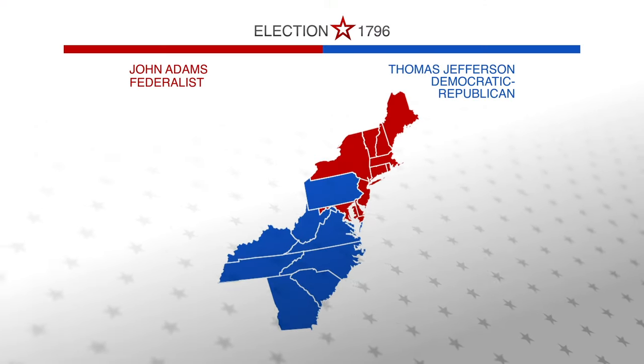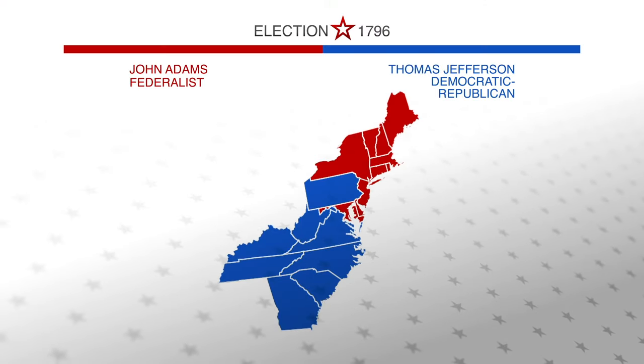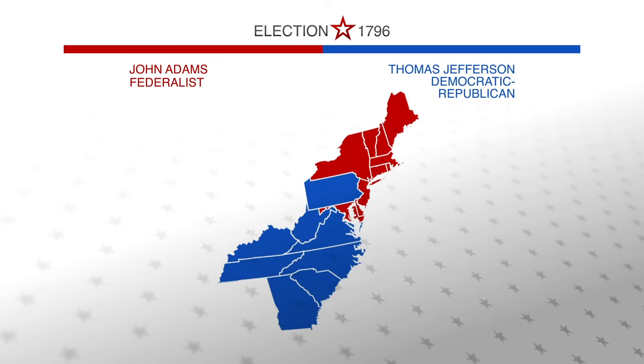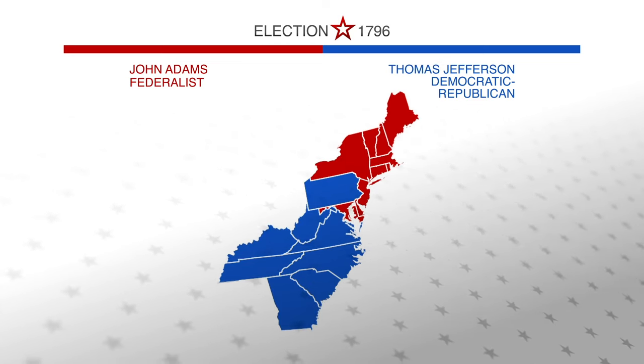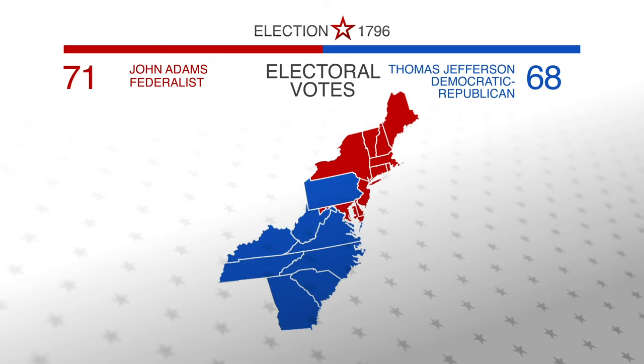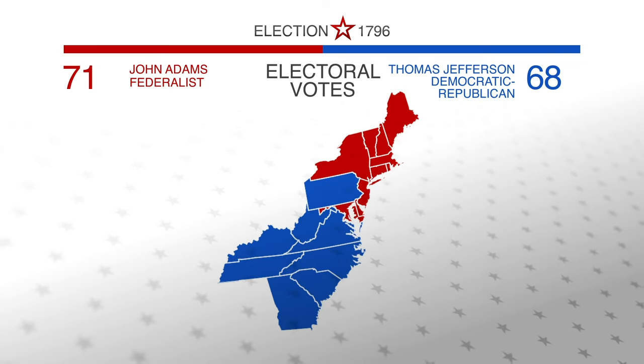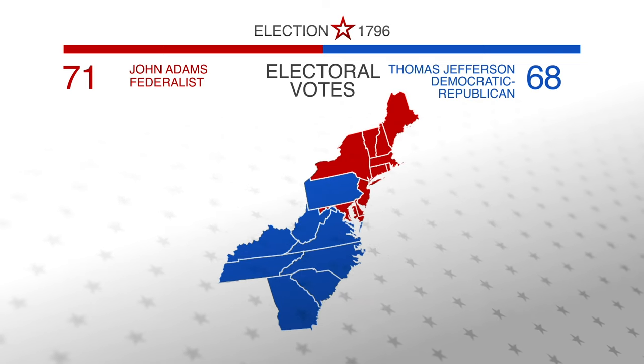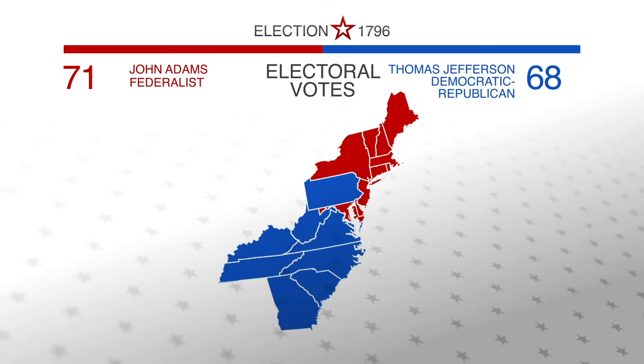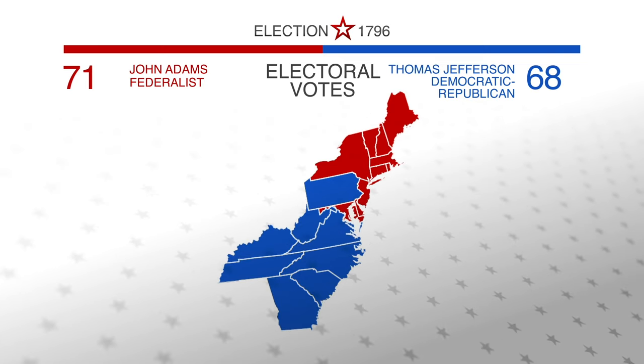Adams won many of the Northern states, while Jefferson won most of the South. In the end, John Adams won 51% of the electoral vote, becoming the first and only Federalist president. At the time, elections were held differently than they are today. John Adams got a majority of the electoral votes, so he became president.